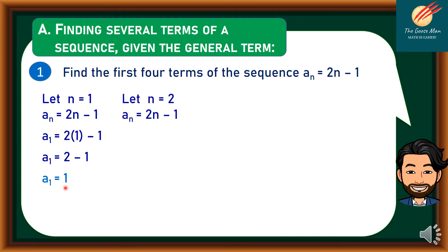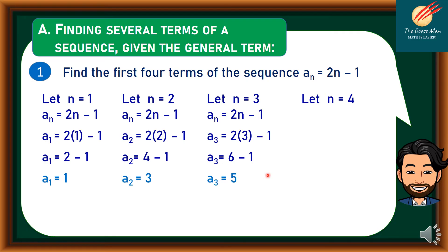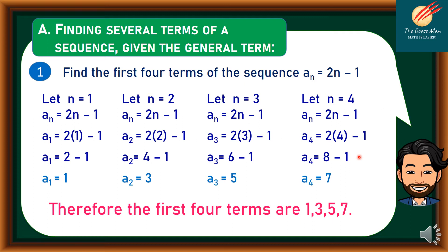For n equal to 2, a sub 2 equals 2(2) minus 1, which is 4 minus 1, so the second term equals 3. For n equal to 3, a sub 3 equals 2(3) minus 1, so the third term equals 5. For n equal to 4, a sub 4 equals 2(4) minus 1, which is 8 minus 1, so the fourth term equals 7. Therefore, the first four terms are 1, 3, 5, and 7.